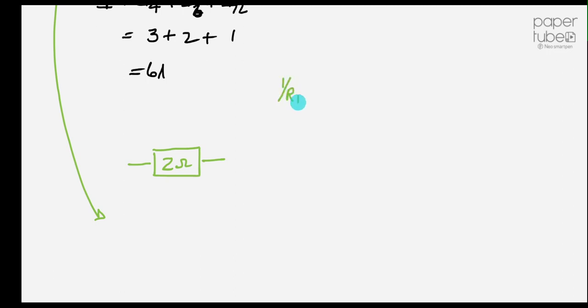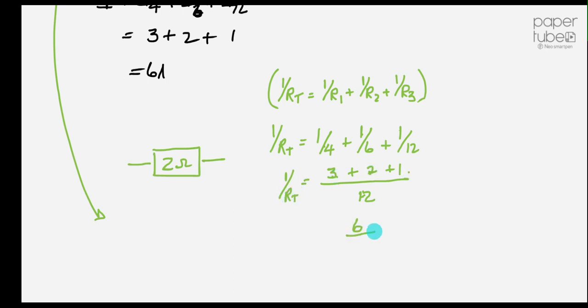1 over R total is equal to 1 over R1 plus 1 over R2 plus 1 over R3. And guess what? I've written down an equation. So 1 over R total is equal to 1 over 4 plus 1 over 6 plus 1 over 12. The common denominator is 12. 3 twelfths is 1 quarter, 2 twelfths is 1 sixth, and 1 twelfth is 1 twelfth. So R total is 5 over... 6 over 12.